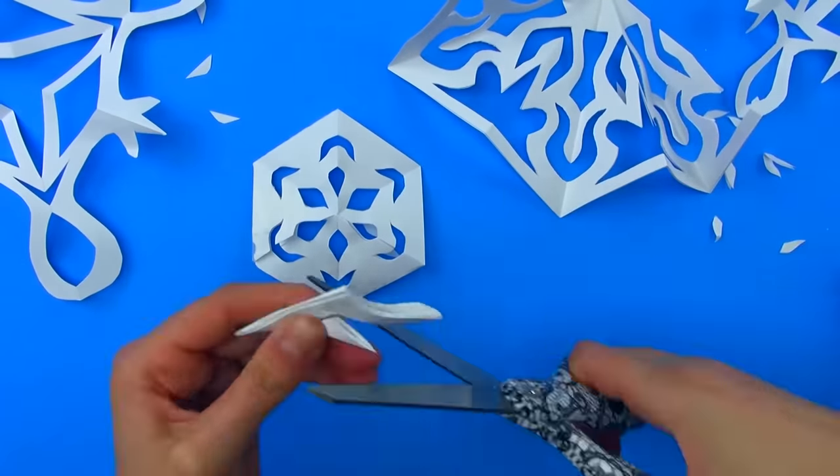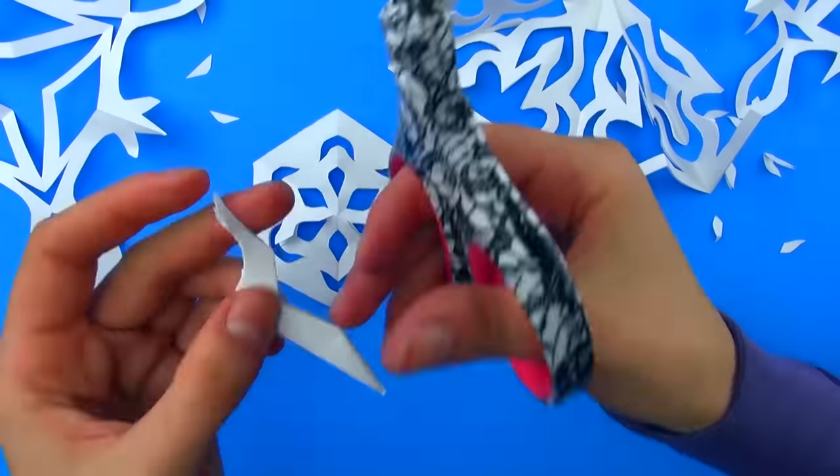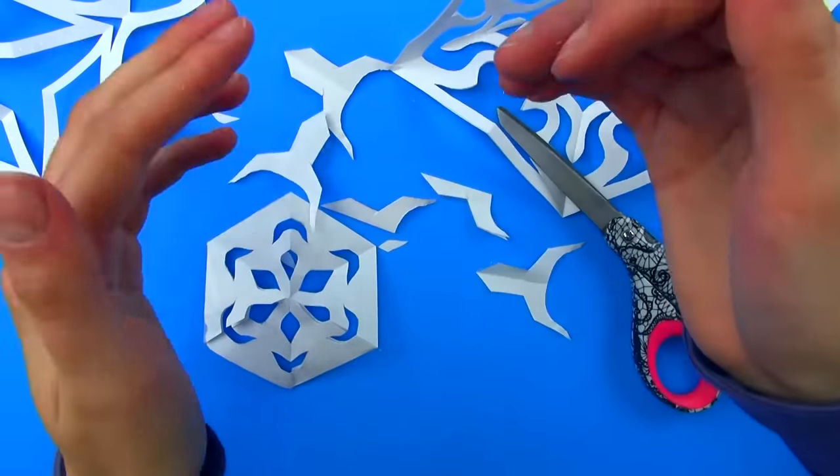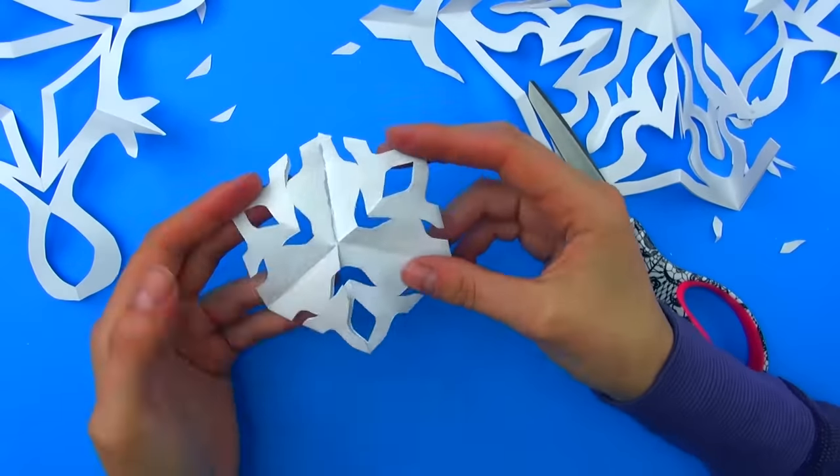I mean, maybe you learned from experience that with paper snowflakes, if you cut the entire folded edge off, then it falls apart. So you figure something similar might happen with a hexaflexa-flakes, only there's more folded edges.